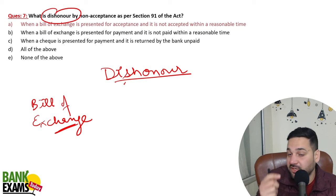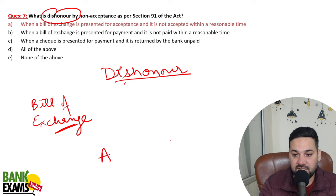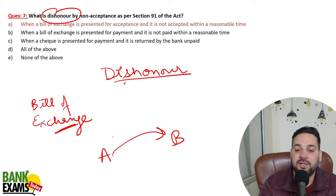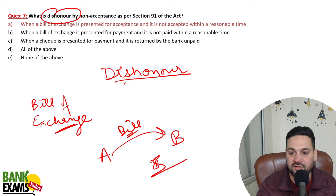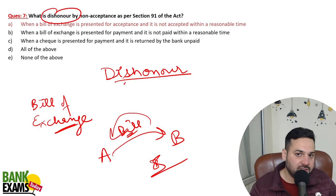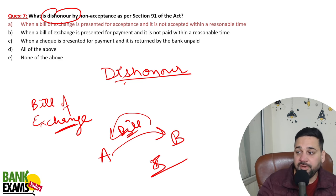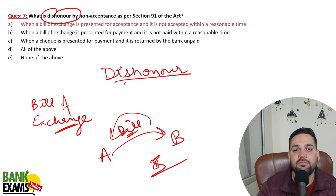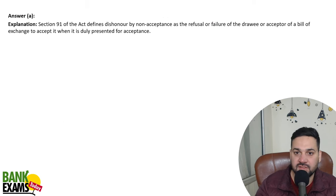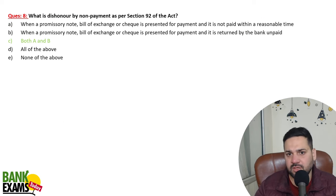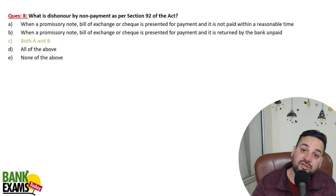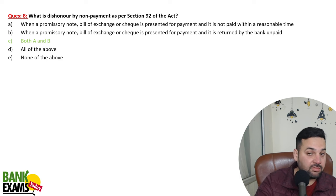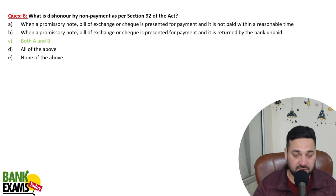When a bill of exchange is presented for acceptance but not accepted, that is dishonor by non-acceptance. For example, A sends B a bill — B received the goods but did not sign the bill; that is dishonor by non-acceptance. If B does not pay on time, that is dishonor by non-payment. Similarly, if a cheque is deposited in the bank and bounces due to insufficient balance, that is also dishonor by non-payment.